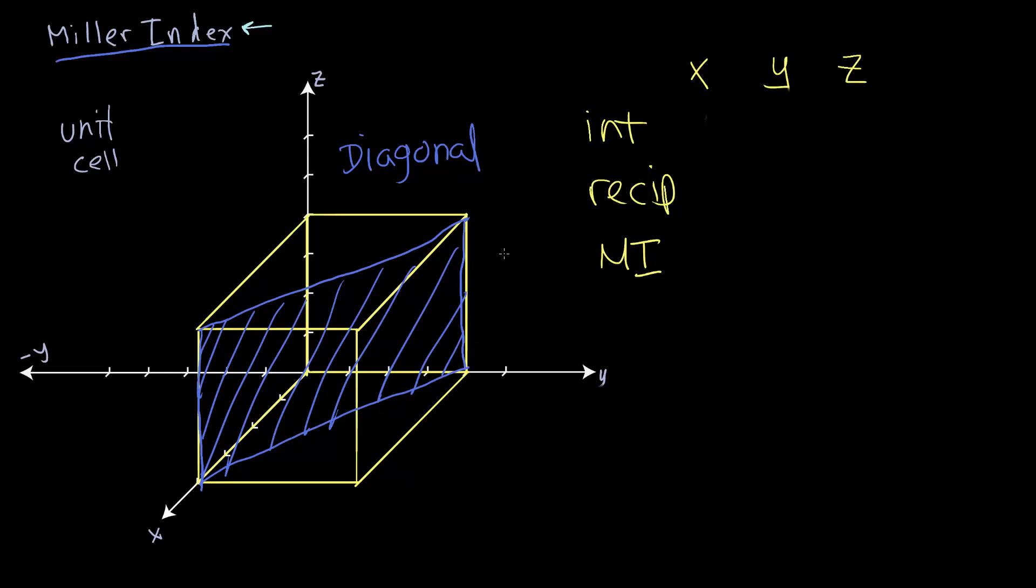And go through our procedure as before. So this plane intercepts x at 1, y at 1, and it just extends off into z. So we say that intercepts z at infinity. So we have 1, 1, and infinity. We can take reciprocals and get 1, 1, and 0.